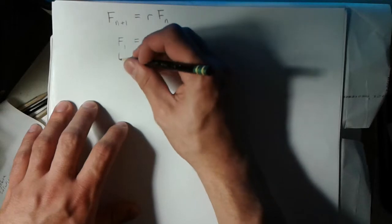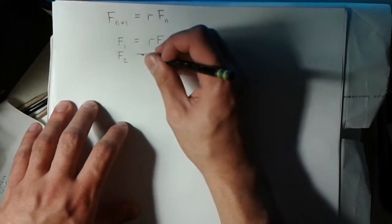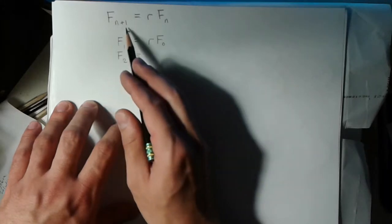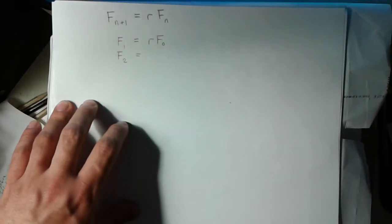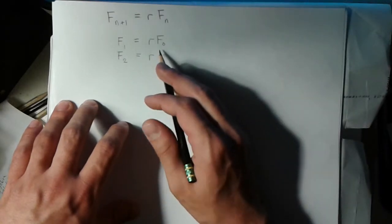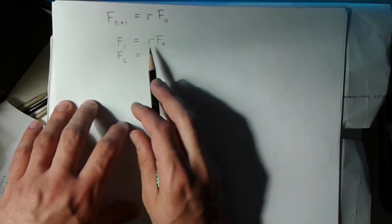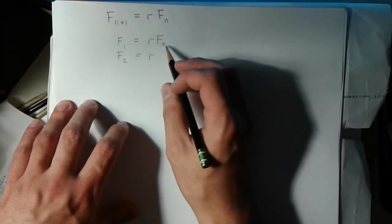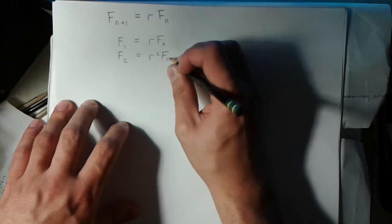Then I can look at the next term. Now we're thinking of n as being 1, so F_2 equals r times F_1. Instead of writing F_1, I'm going to substitute what we found, so r times r F_0 is just r squared F_0.